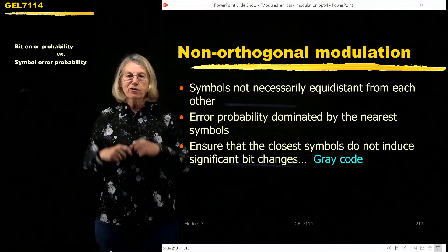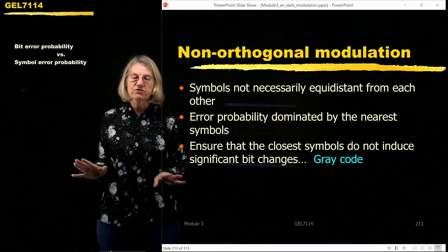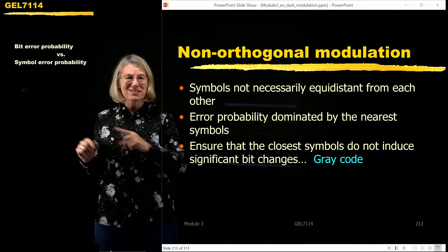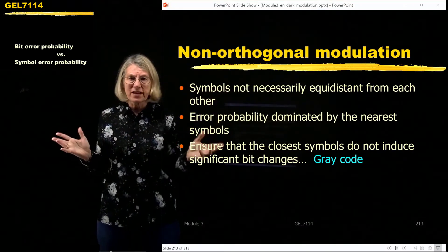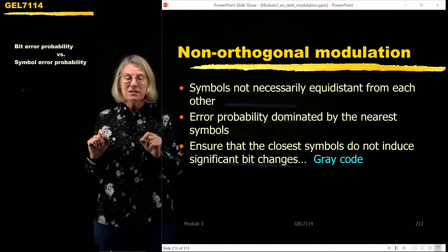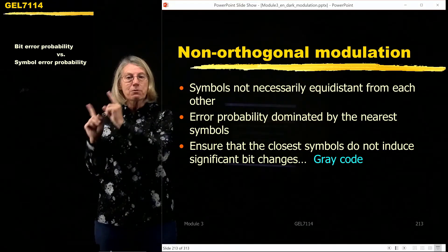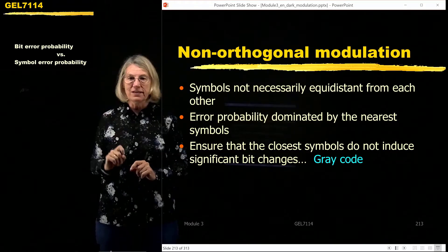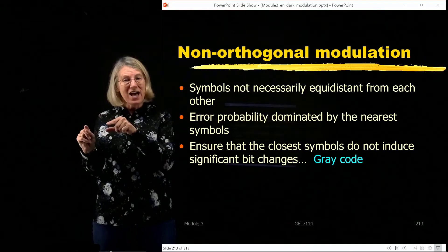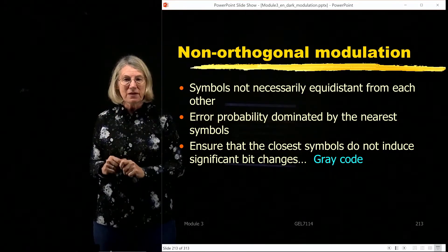What happens when we go to non-orthogonal modulation? Everything changes. The way we approach the problem has to change fundamentally, because previously we had so much symmetry. Before, we had equidistant symbols. Here, the symbols are not necessarily equidistant, and because of that, the error probability is dominated by certain pairs — the nearest neighbor pairs of symbols that dominate the symbol error rate. Because of that, it depends on which bits we assign to those nearest neighbor symbols that determines the performance of the system.